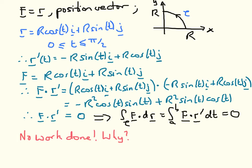In the second question, the vector field is the position vector, and the path is part of a circle going from the point with coordinates (r, 0) on the x-axis to the point with coordinates (0, r) on the y-axis. We can parameterise such an arc of a circle by saying that the position vector is r·cos(t)·i + r·sin(t)·j, where t goes from 0 to π/2.